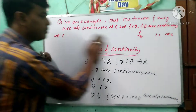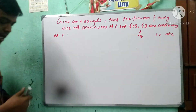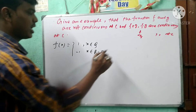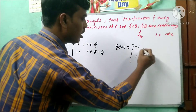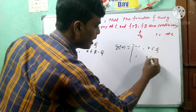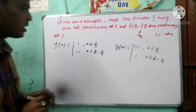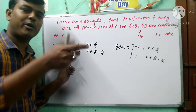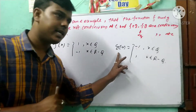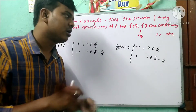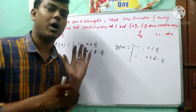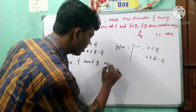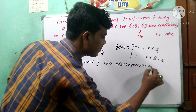Let me give an example. Define F(x) as: 1 if x belongs to Q, and minus 1 if x belongs to R minus Q. Define G(x) as: minus 1 if x belongs to Q, and 1 if x belongs to R minus Q. The rational point gives function value 1 for F, and the irrational point gives minus 1 for F. Similarly G(x) takes opposite values.